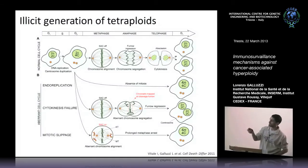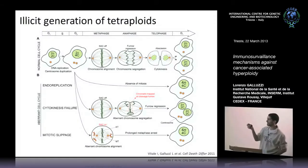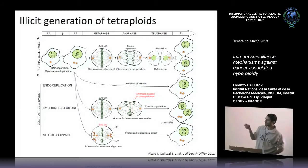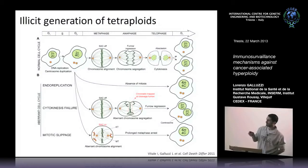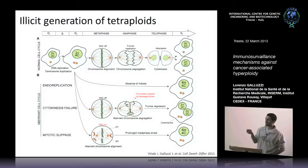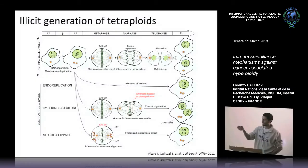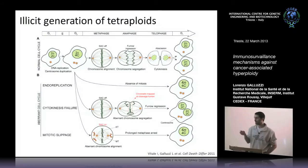Otherwise, a cell can start mitosis, and something can go wrong at the level of cytokinesis, so two nuclei are separated normally but remain within the same daughter cell — you have two diploid nuclei within the same tetraploid cell. Or you can get what is called mitotic slippage: the metaphase plate is faulty, the spindle assembly checkpoint — a mechanism to ensure normal cell cycle progression — remains on as a signal to arrest mitosis, and after a prolonged metaphase arrest these cells slip into a tetraploid G1 phase.